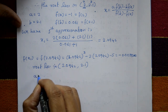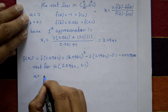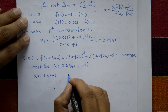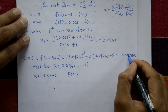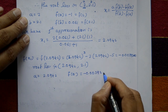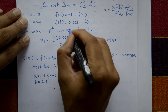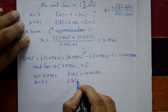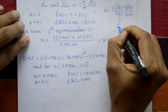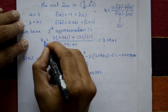Now a is equal to 2.0942, f of a is minus 0.00392, b is equal to 2.1, and f of b is 0.061. Apply the formula again for the second iteration.